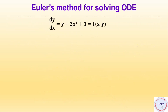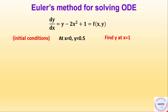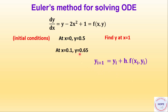Let's take an example. The differential equation is given, with initial conditions x₀ = 0 and y₀ = 0.5, and we need to find y at x = 0.1. Using the Euler formula, y at x = 0.1 is 0.65, calculated by taking y₀ = 0.5, step size h = 0.1, and evaluating the function f at (x₀, y₀) to obtain y1 at x1.